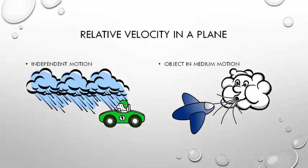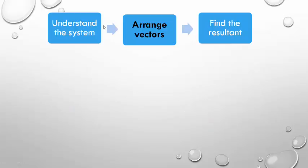To solve numericals for relative velocity in a plane, you have to follow three simple steps. First, understand the system - understand what type of motion it is, whether it is independent motion or object in medium motion. Then, arrange the vectors - draw the velocity vectors for the object individually and then connect them to find the resultant vector or the resultant angle of incidence, whatever is asked in the question.